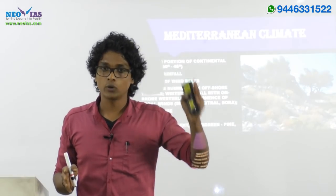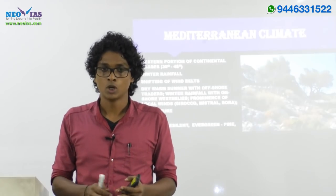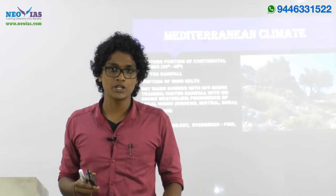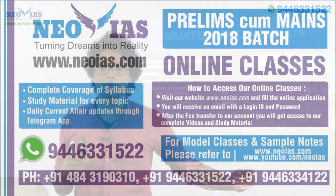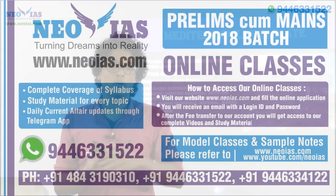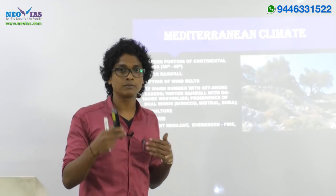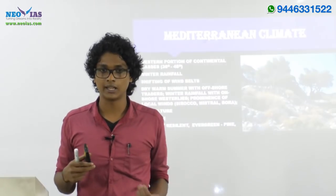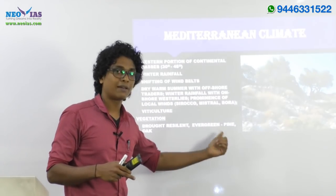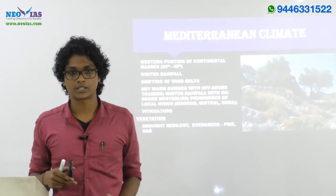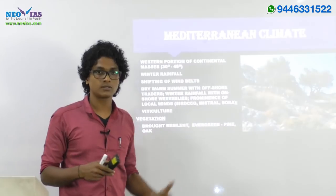Regarding vegetation, during summer time we are having very dry and warm conditions and during winter we are having rainfall. So vegetation forming over these regions must be able to withstand dry conditions in summer and also withstand the rainfall in winter. The vegetation here will be like evergreen oak trees or pine trees, and sometimes deciduous trees, which shed their leaves. Primarily the vegetative type should be drought resilient — evergreen pine and oak trees or deciduous trees.